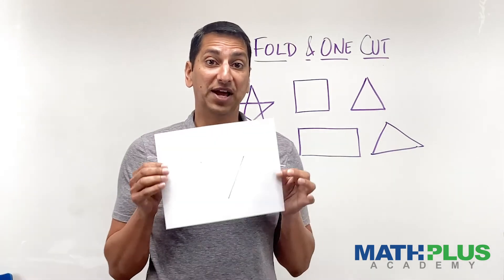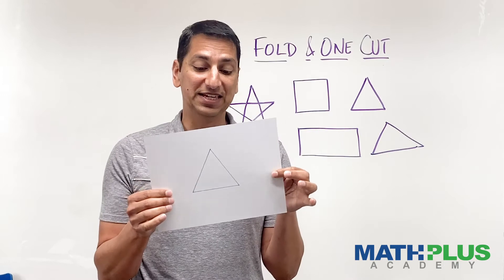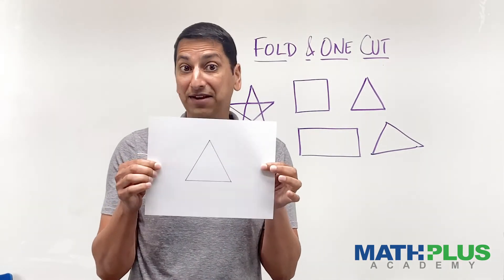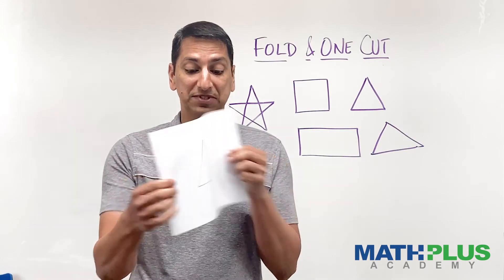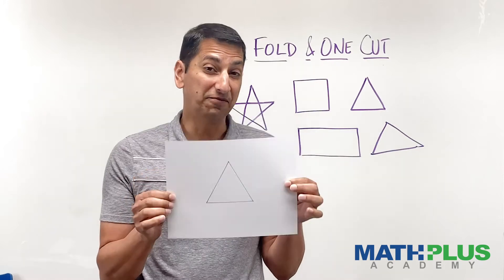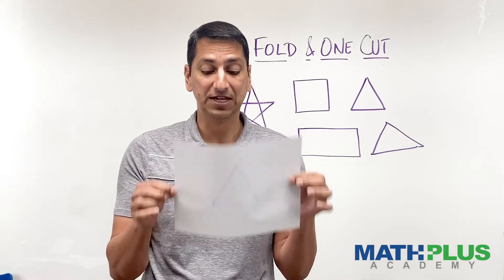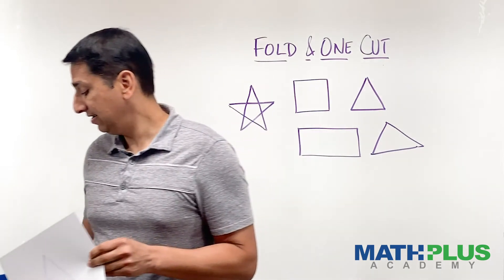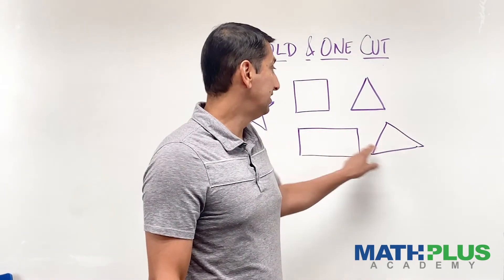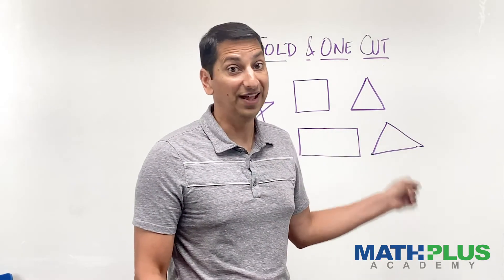If you solve that, try the equilateral triangle where all of the sides are the same length. This has a lot of symmetry, it's symmetric this way and across different axes, so this is often a little easier. Things that are symmetric you'll find are easier. Try that and then you can either try the scalene triangle where all the angles and all the sides are different. That's pretty tricky.